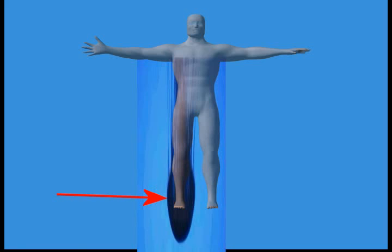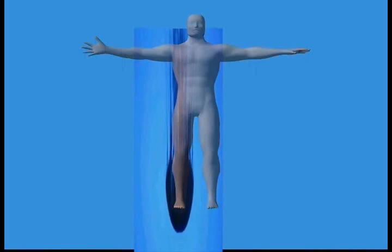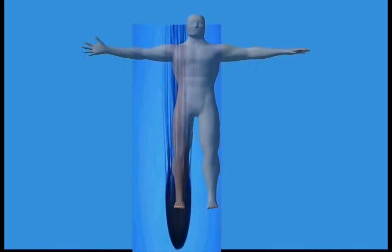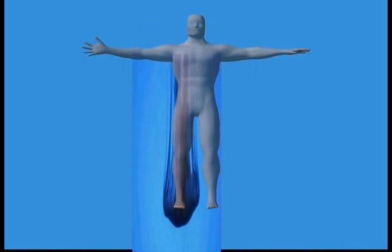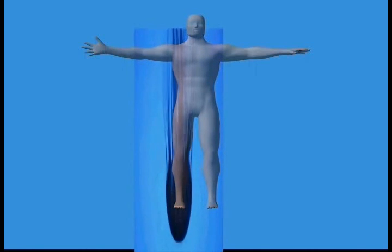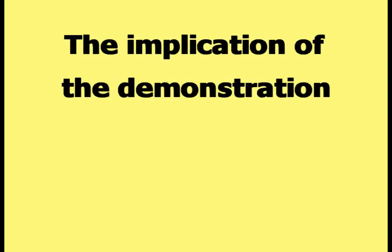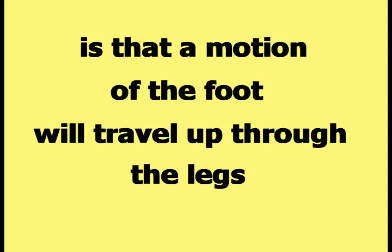This picture shows the main body of the jellyfish superimposed on the foot, with the tentacles running up through the leg and into the body. When the jellyfish is shown moving, the movement of the main body of the jellyfish — which is located at the foot — travels all the way down the tentacles, which are superimposed over the leg and body. The implication is that a motion of the foot will travel up through the legs and into the body.